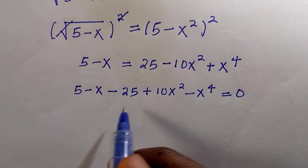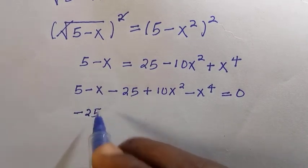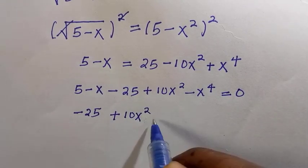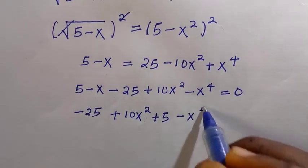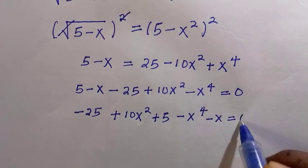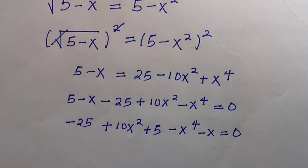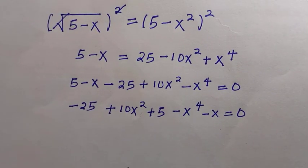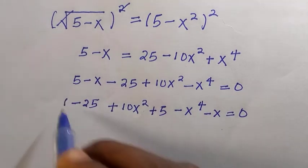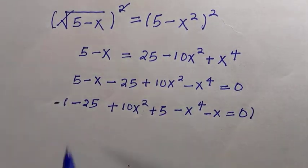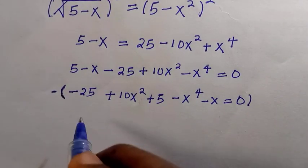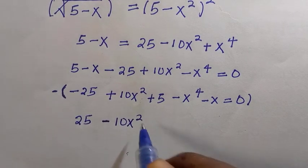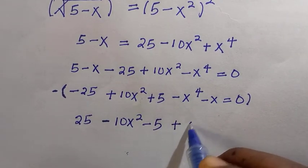We rearrange so that positive terms come first: 25 plus 10x² plus 5 minus x⁴ minus x, all equal to zero. Then multiplying through the negatives, this becomes 25 minus 10x² minus 5 plus x⁴ minus x equal to zero.